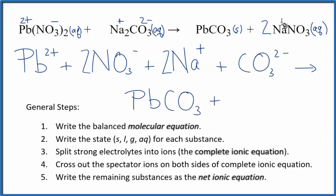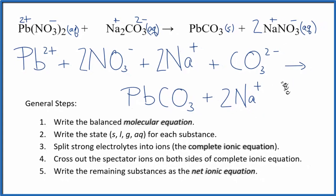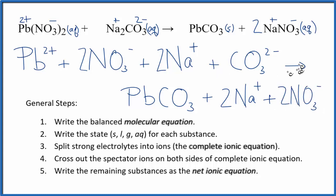Plus, we had our positive and our negative here, 2 sodium ions and then 2 nitrate ions. So now this is our complete ionic equation. We have our reactants here and our products.